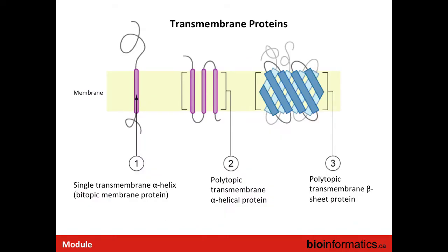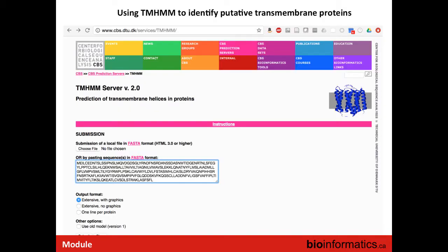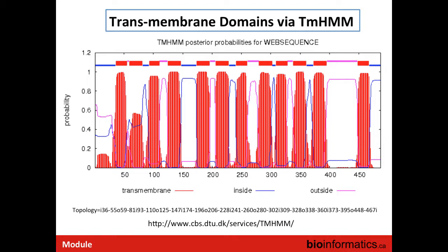Another thing you can do is look for evidence of transmembrane domains. Many transmembrane proteins have characteristic signatures — hydrophobic regions surrounded by hydrophilic regions, where the hydrophobic stretch extends through the membrane. There's a tool called TMHMM that predicts transmembrane domains within your protein sequences. You input your protein sequence and it gives you an informative report showing predicted transmembrane domains and the orientation — inside versus outside the cell — along with scores across the sequence.